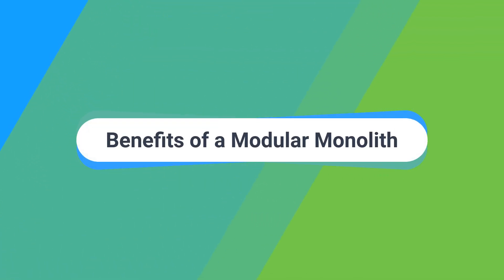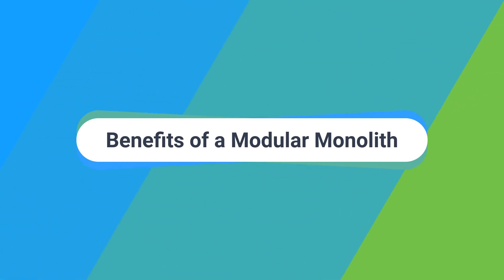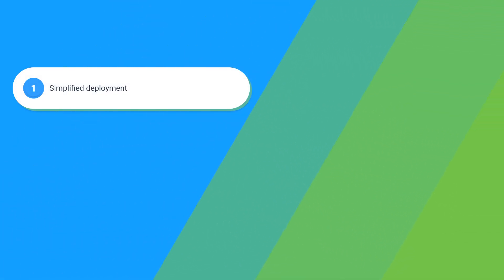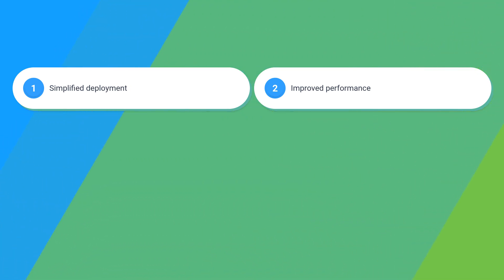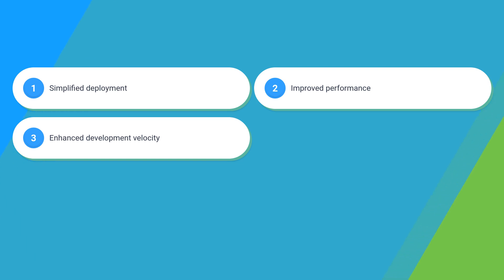Modular monoliths have many benefits, so I want to highlight a few that I consider important. Simplified deployment: unlike microservices, which require complex deployment strategies, a modular monolith can be deployed as a single unit. Improved performance: communication between modules occurs in process, meaning there's no network latency or data serialization/deserialization overhead. Enhanced development velocity: there's a single codebase to manage, simplifying debugging and the overall development experience.